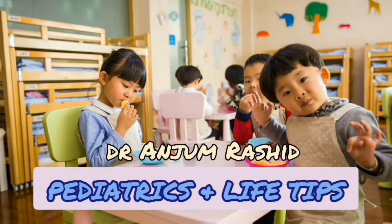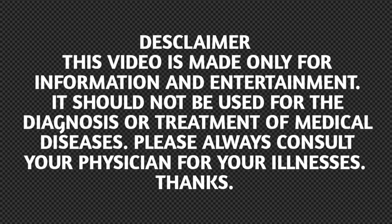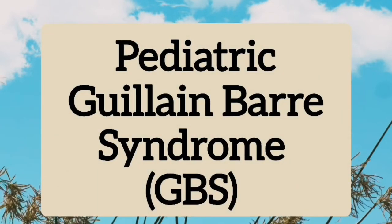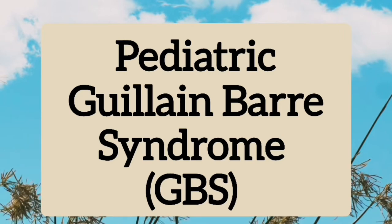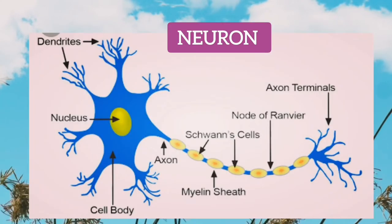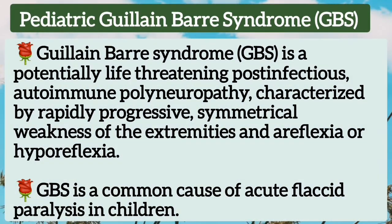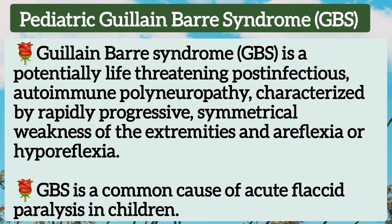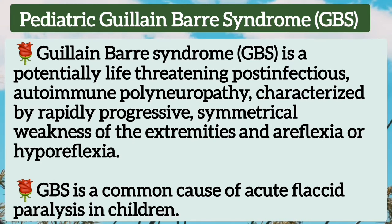Hello friends, welcome to my channel Pediatrics and Life Tips. Today I will talk about Pediatric Guillain-Barré Syndrome, which is also known as GBS. Guillain-Barré Syndrome is a potentially life-threatening post-infectious autoimmune polyneuropathy. It is characterized by rapidly progressive symmetrical weakness of the extremities and areflexia or hyporeflexia. GBS is a common cause of acute flaccid paralysis in children.